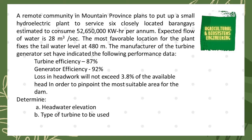This time I'm going to show you the solution for a problem about hydropower. A remote community in Mountain Province plans to put up a small hydroelectric plant to service six closely located barangays, estimated to consume 52 million 650,000 kilowatt-hours per annum. Expected flow of water is 28 cubic meters per second. The most favorable location fixes the tailwater level at 480 meters. The turbine-generator set performance data: turbine efficiency 87%, generator efficiency 92%, and head loss will not exceed 3.8% of the available head.